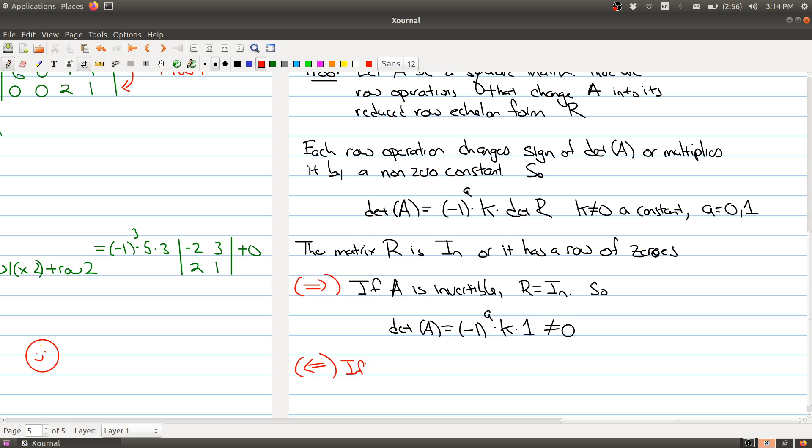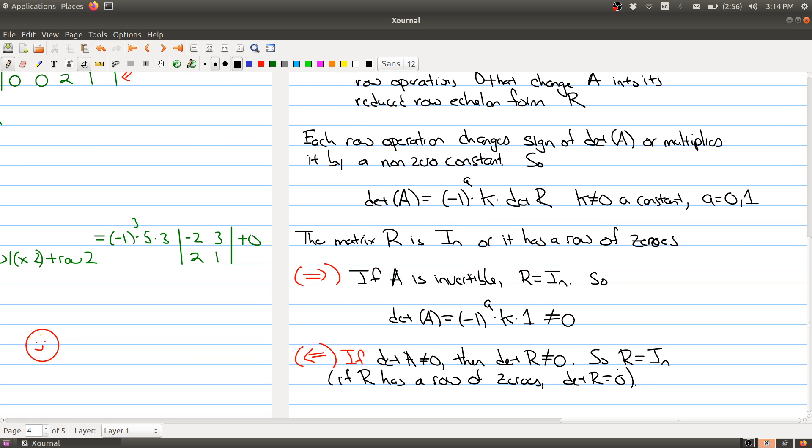For the reverse direction, we have, oops, well, that's okay. We'll do the following. If the determinant of A does not equal zero, then the determinant of R does not equal zero. So R has to be equal to the identity. Because we saw earlier that if you have a matrix with a row of zeros, it has determinant of R equal to zero. But when you reduce your matrix and you get the identity matrix, then your matrix has to be invertible. But then A is invertible. And here we're using the invertible matrix theorem, which says that a matrix is invertible if and only if it can be put into reduced row echelon form of the identity matrix.